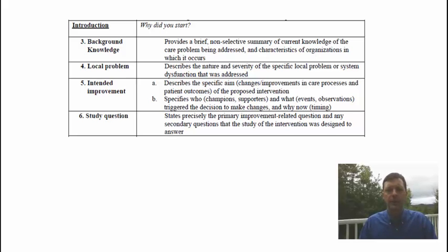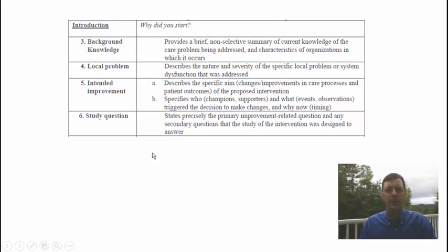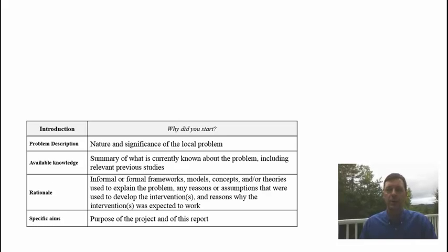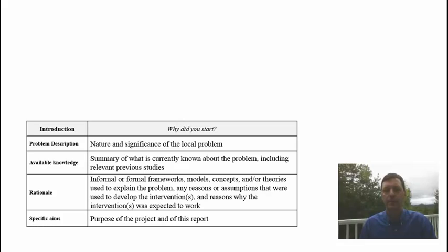Next is the idea of theory. In SQUIRE 2.0, a new component called 'rationale' was added to the introduction section. We didn't use the word 'theory' as an item label because it felt too ethereal; 'rationale' is a little easier to grasp. It could include formal frameworks, models, concepts, or theories that explain the problem, as well as the assumptions used to develop the interventions and why the intervention was expected to work. SQUIRE 2.0 pushes authors to clearly articulate why a given intervention was assumed to be effective in a particular setting.